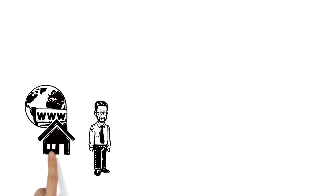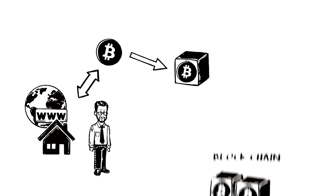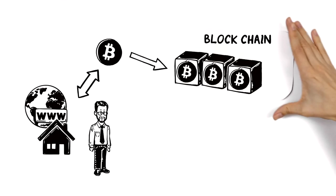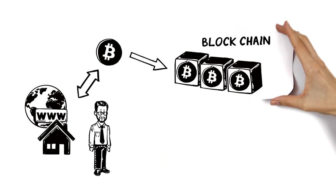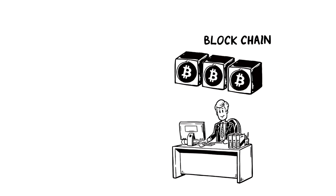Users each have their own address from which they can send and receive Bitcoins. A collection or block of these transactions is then added to the blockchain, Bitcoin's equivalent of a bank's ledger. Users that maintain this form of accounting are rewarded with new Bitcoins. This is known as mining.